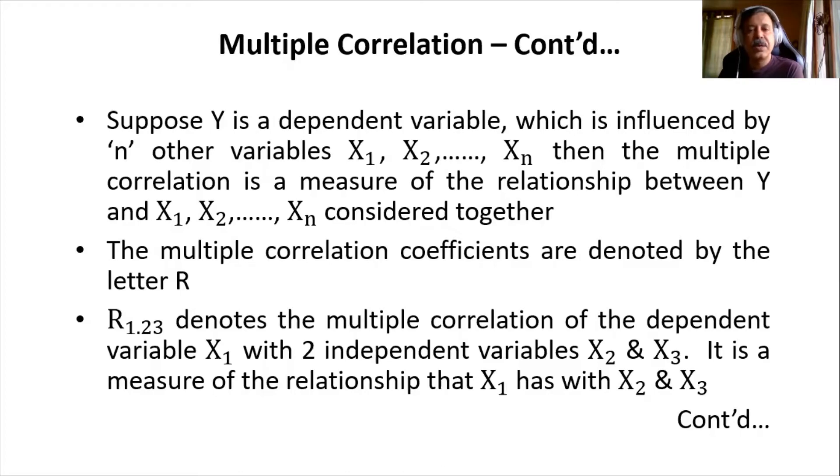Generally, multiple correlation coefficients are denoted by the letter capital R. For example, if I say R1.23, it means that here 1 indicates x1 variable, 2 and 3 indicates x2 and x3 variables.